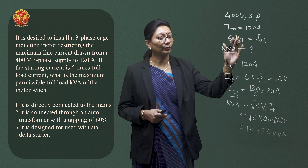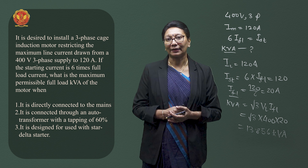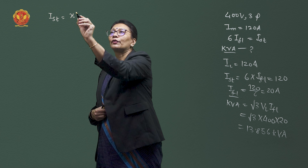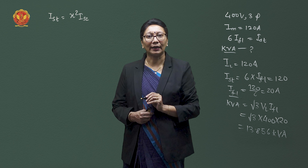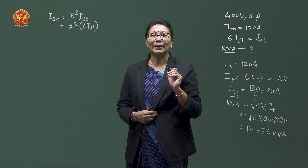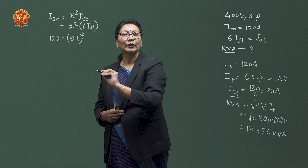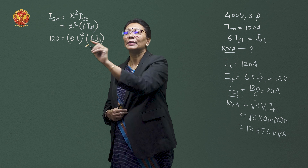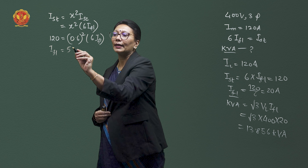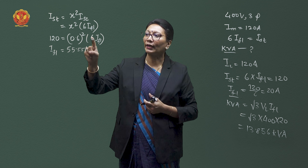That was the first condition — direct online starting. The second condition uses an auto transformer with 60% tapping. For auto transformer starting, the starting current equals x² times the short circuit current, which is x² times 6 times full load current. With tapping x equal to 0.6 and maximum current of 120A, the full load current works out to 120 divided by (0.6² × 6), giving 55.55 amperes.